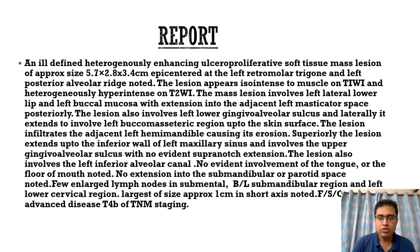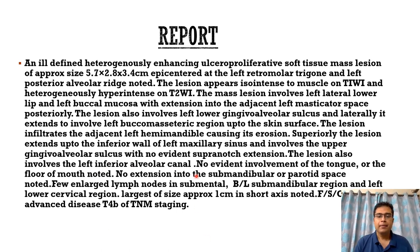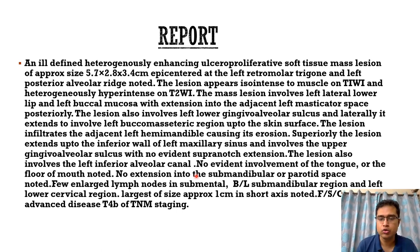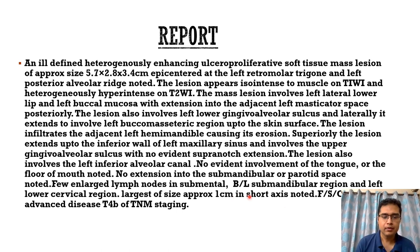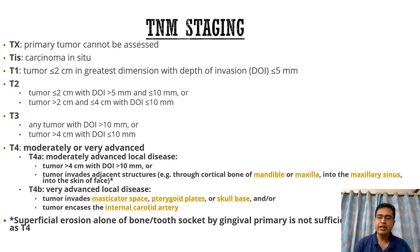The lesion also involves the left inferior alveolar canal — this is a very important point to mention in any report, because most carcinomas of the retromolar trigone will involve the inferior alveolar canal, and once the nerve is involved it can cause perineural extension of the tumor. There was no evident involvement of the tongue or the floor of the mouth, which also has to be mentioned in the report. There was no extension into the submandibular or parotid space. A few enlarged lymph nodes were seen in the submental, bilateral submandibular, and left lower cervical regions. Features were suggestive of advanced T4b disease of oral carcinoma.